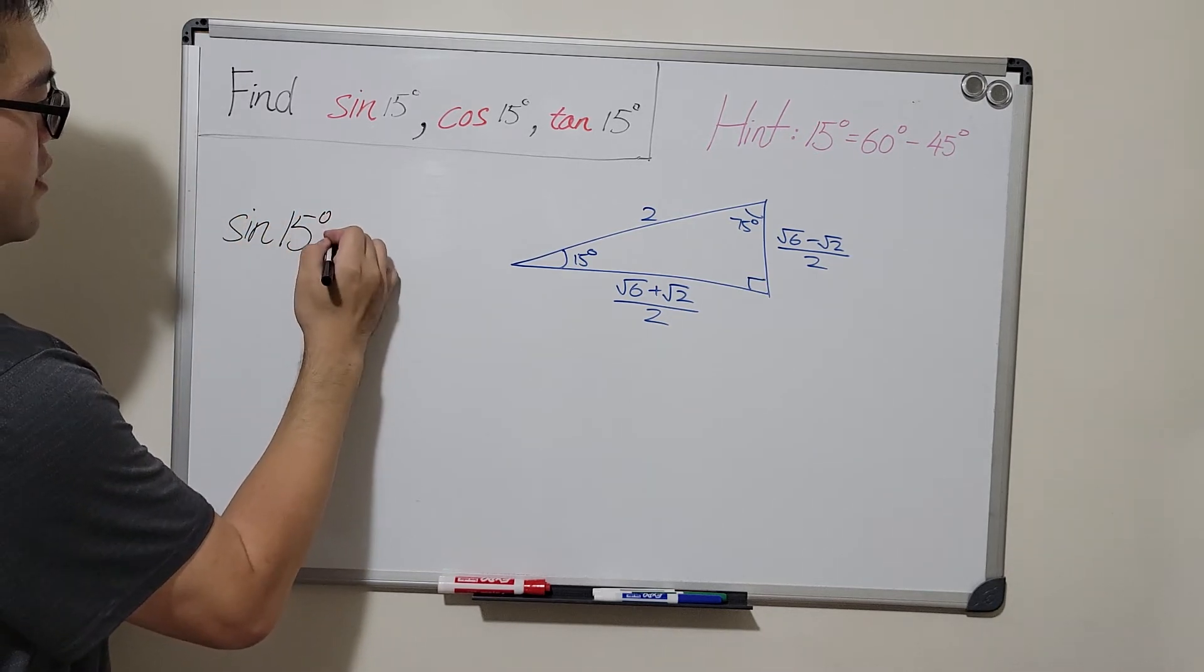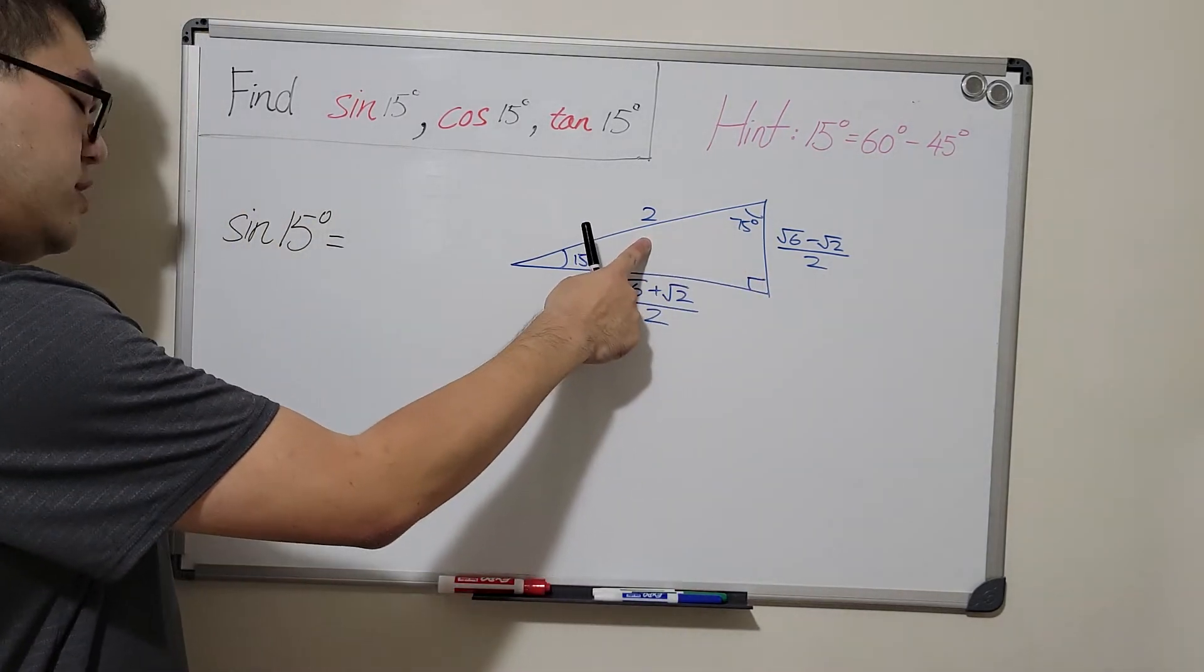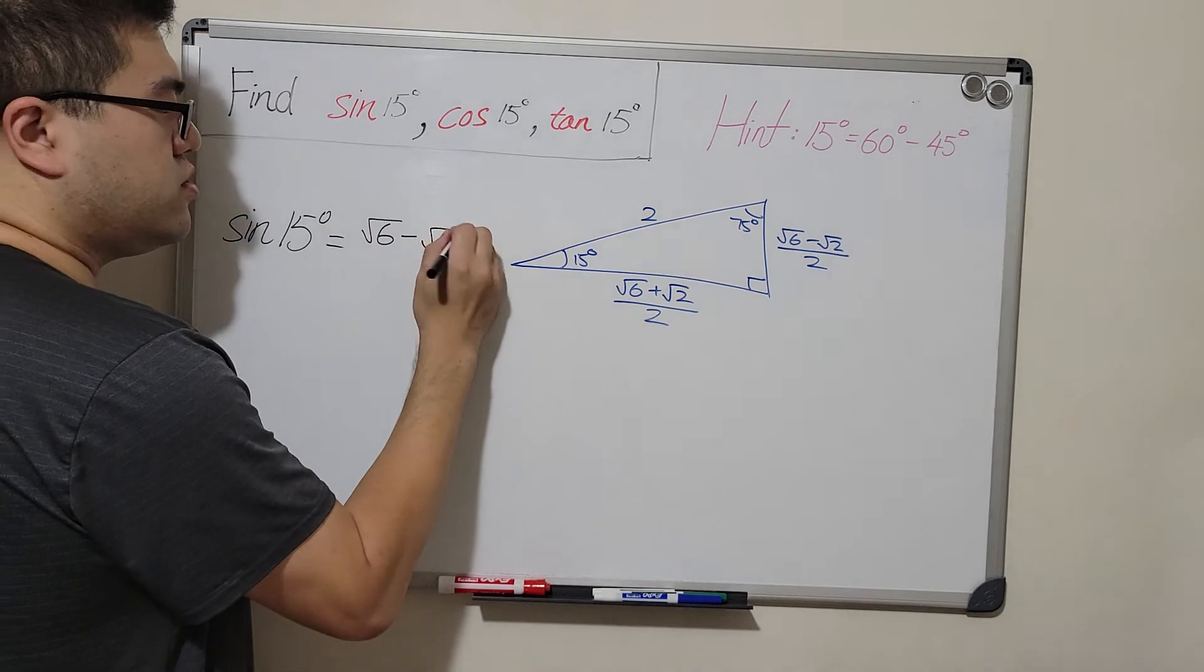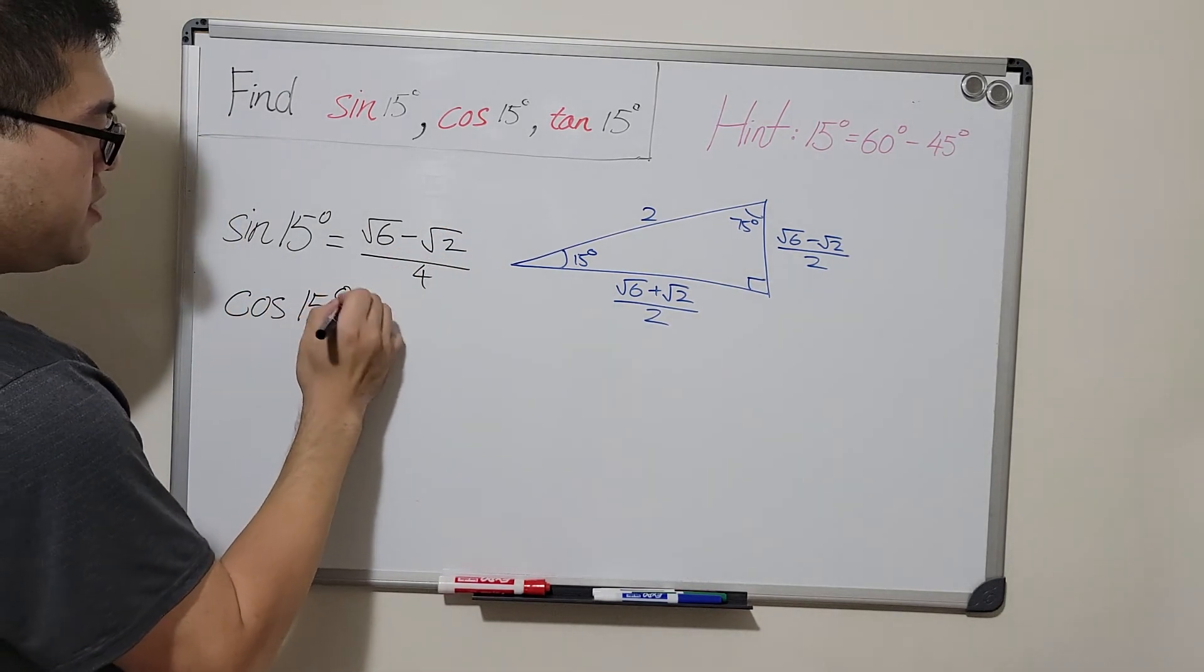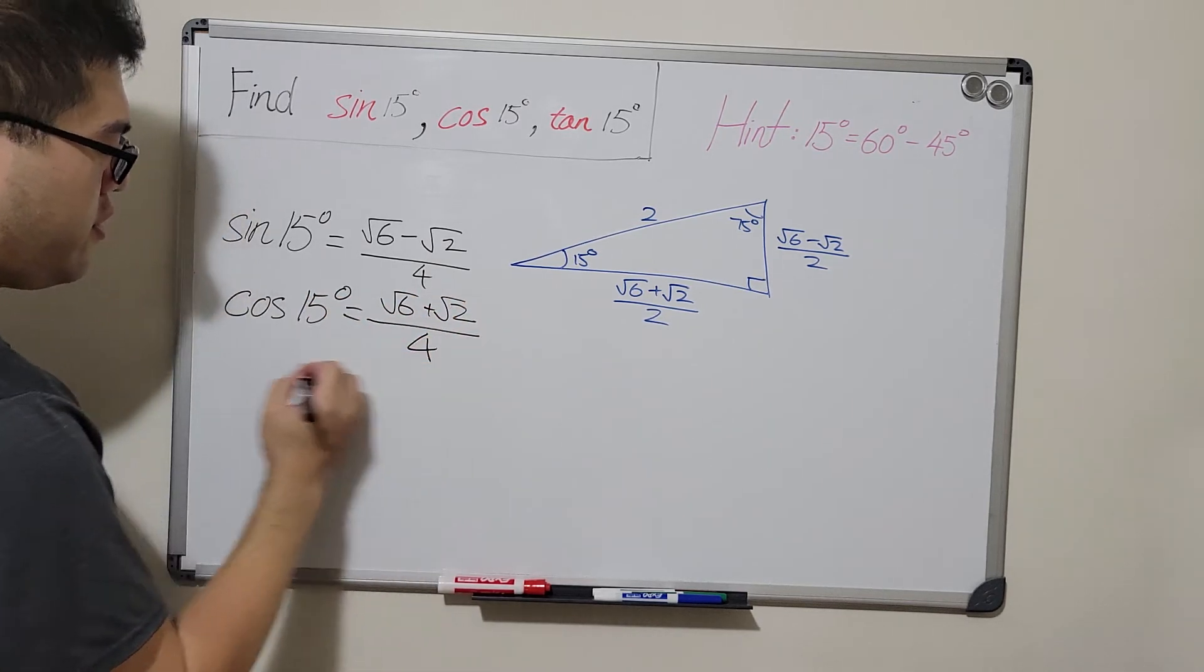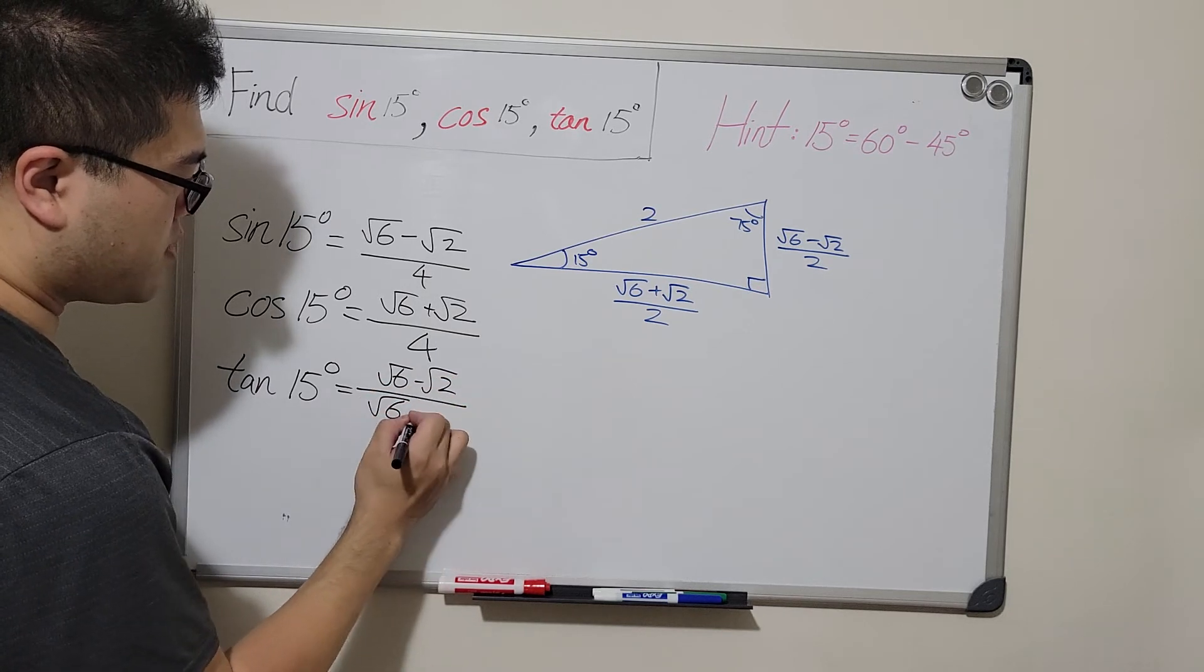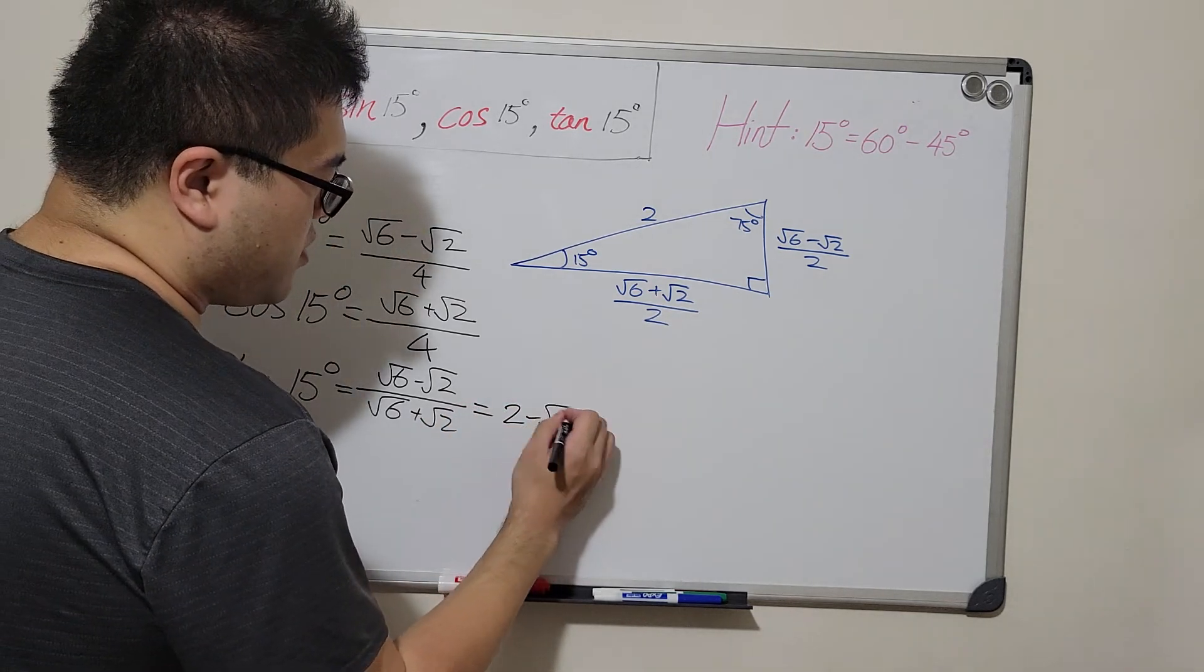So, sine of 15 degrees, according to this right triangle, will be the opposite over hypotenuse, which gives us (square root of 6 minus square root of 2) over 4. Cosine of 15 degrees will be (square root of 6 plus square root of 2) over 4. And finally, tangent of 15 degrees will be (square root of 6 minus square root of 2) over (square root of 6 plus square root of 2). And if we simplify it, we get 2 minus square root of 3.